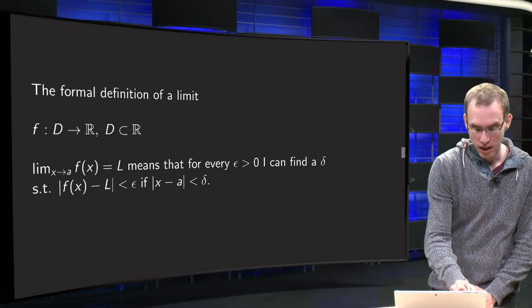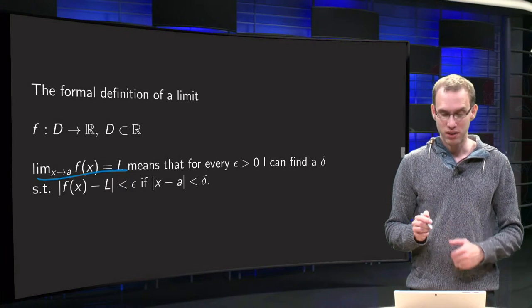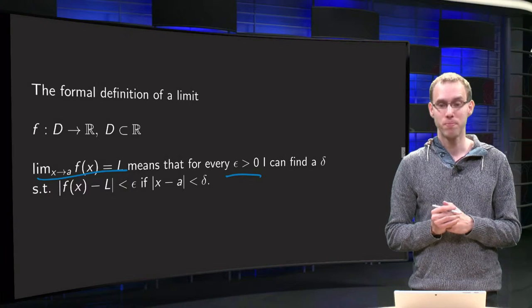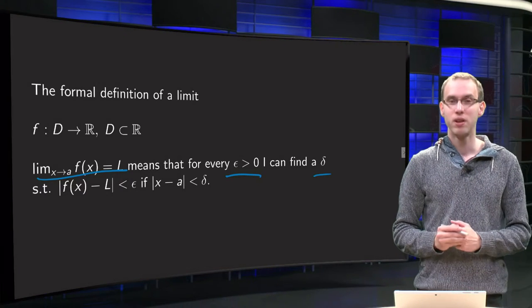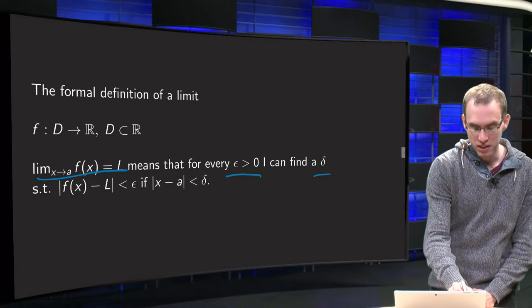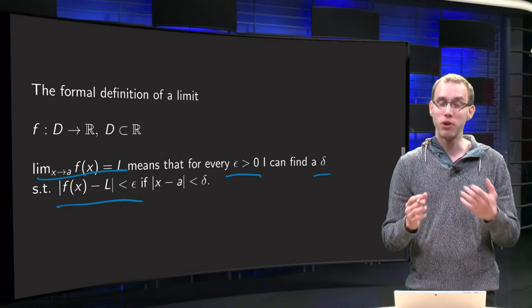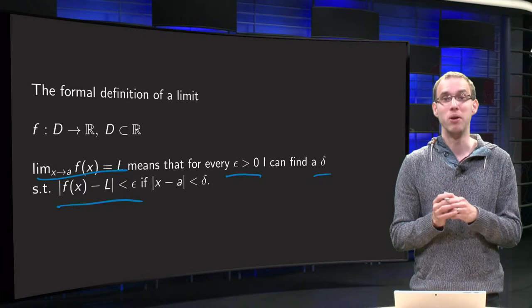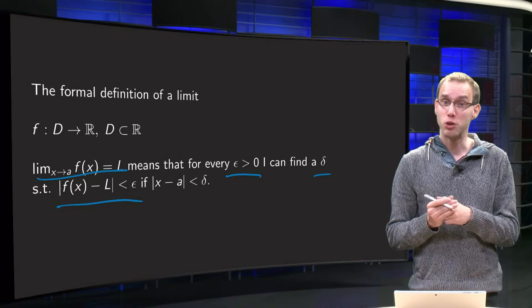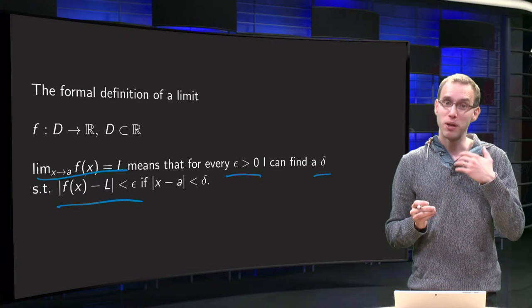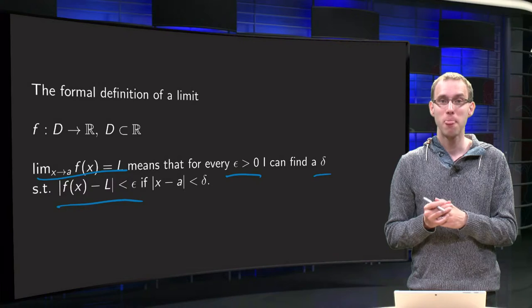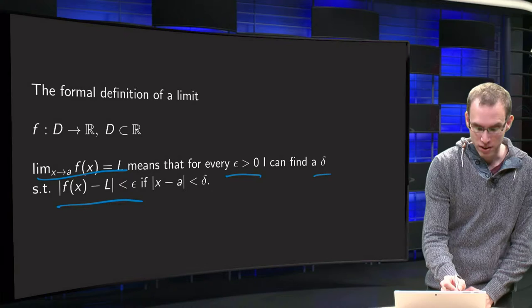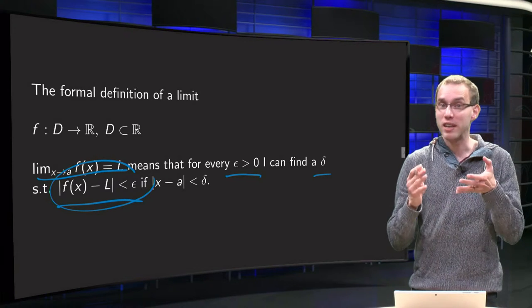Well, the limit x to a f(x) equals L, that means that for every epsilon bigger than zero, I can give you a delta such that |f(x) - L| is smaller than epsilon, such that f(x) gets very close to L, because usually this epsilon will be chosen very small. So if someone gives you an epsilon, say 0.1, you can find a delta such that the distance from f(x) to L is smaller than this 0.1.